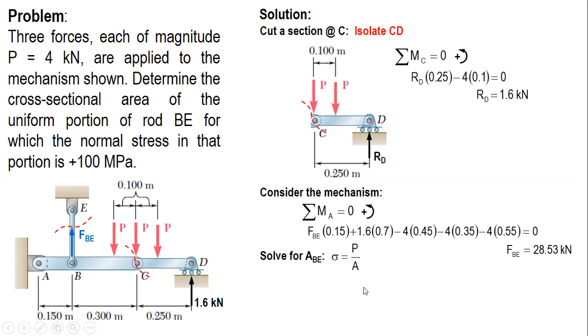We can solve for A. Determine the cross-sectional area of BE. So 28.53 kilonewtons, I convert times 1000 to newtons, and we can cancel the newtons.